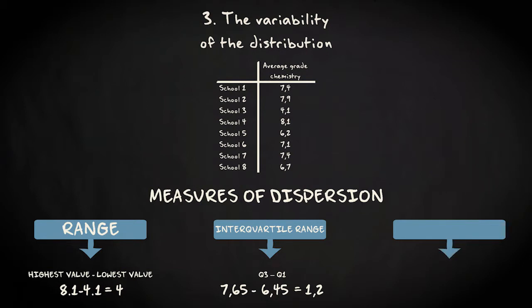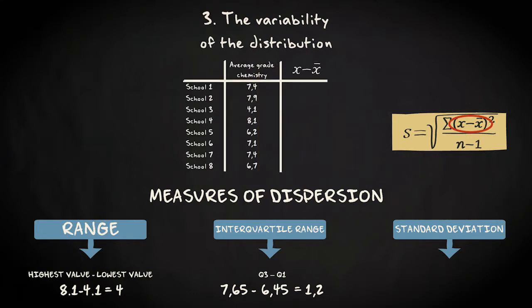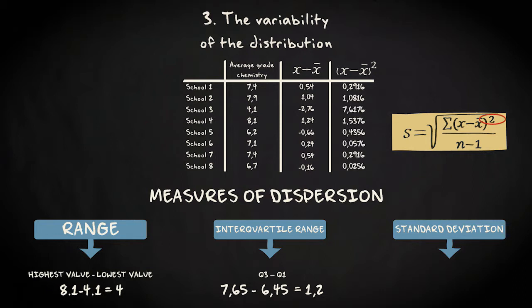Now the third measure of dispersion, the standard deviation. It's a bit more work to compute it. We need this formula. First, we subtract the mean from every individual score. So that's 7.4 minus 6.86 equals 0.54. We do that for all values. This is the result. Next, we square all these values. 0.54 squared equals 0.2916. We do that again for all values and add these scores up. That makes 11.3388. We have now finished this part of the formula.